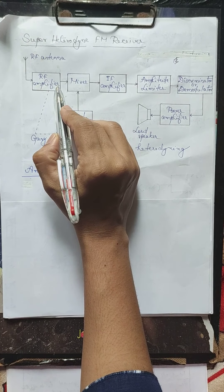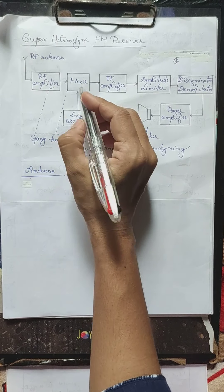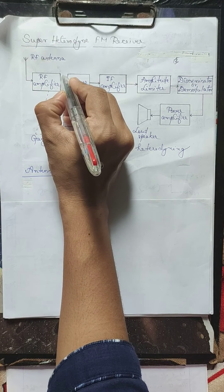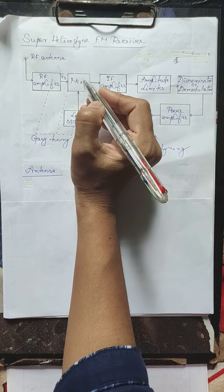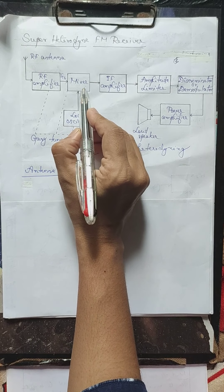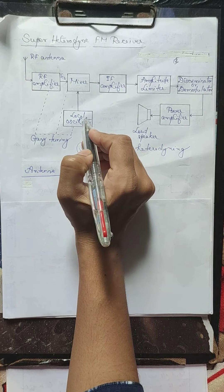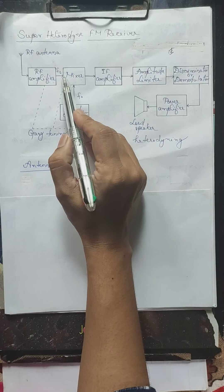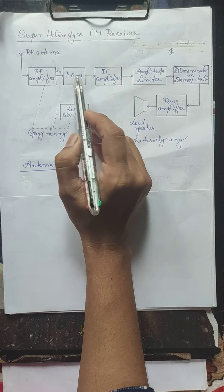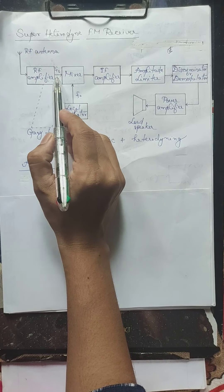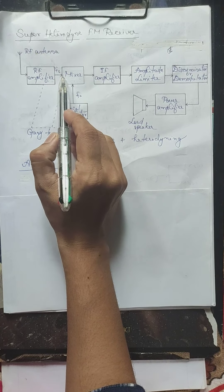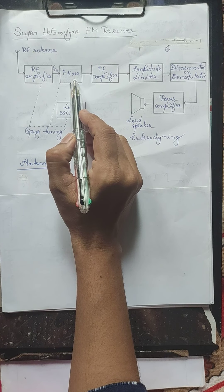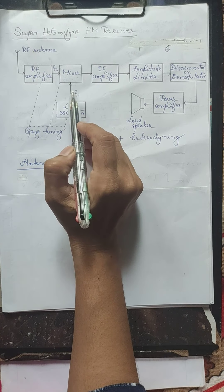The output of the RF amplifier is sent to the mixer. Let the signal from the RF amplifier have a frequency Fs. The mixer receives another input from a local oscillator, which generates sinusoidal waves having a frequency F0. So the mixer receives two input signals: one with frequency Fs (our message or information signal) and one sinusoidal signal with frequency F0. The mixer can generate signals having frequencies which are either the sum or difference of the input frequencies.